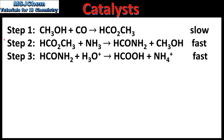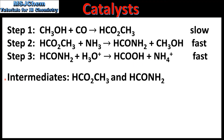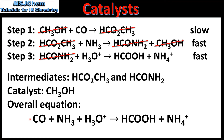In our final example we have a three-step reaction mechanism. In the first step, which is the rate determining step, methanol reacts with carbon monoxide to form methyl methanoate. In the second step, methyl methanoate reacts with ammonia to form methanamide and methanol. In the final step, methanamide reacts with the hydronium ion to form methanoic acid and the ammonium ion. The intermediates in the mechanism are methyl methanoate and methanamide, and the catalyst is methanol. Methanol appears in the reactant side of the rate determining step and is regenerated in the product side of the second step. When we cancel out the intermediates and the catalyst, we are left with the overall equation for the reaction.